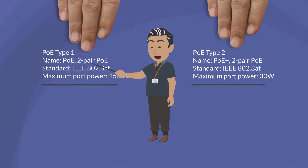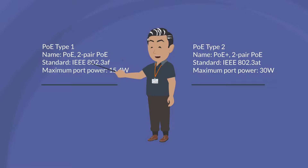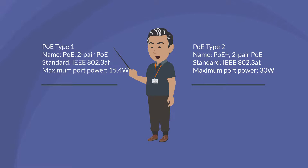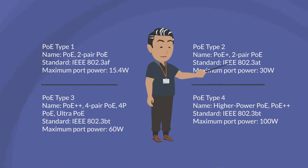The IEEE 802.3af standard is commonly known as PoE, with maximum power at PD being 12.95 watts. The IEEE 802.3at standard is commonly known as PoE+, and it defines PoE classes 0 to 4.